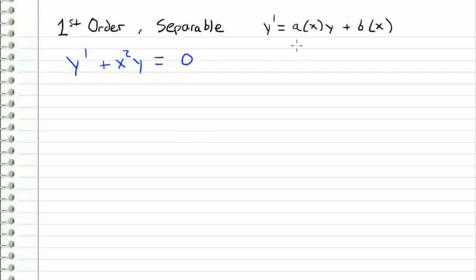We can see that x squared is our a of x and 0 is our b of x. So in order to solve this differential equation, we just separate the two variables.